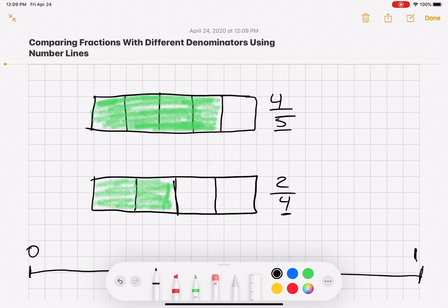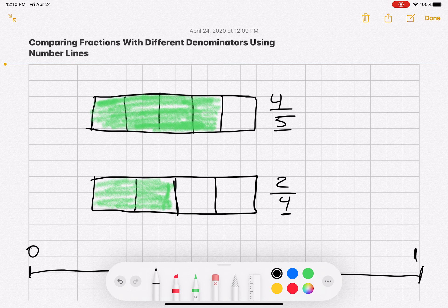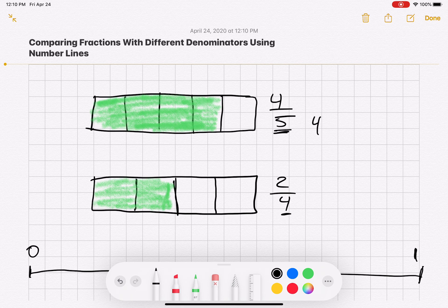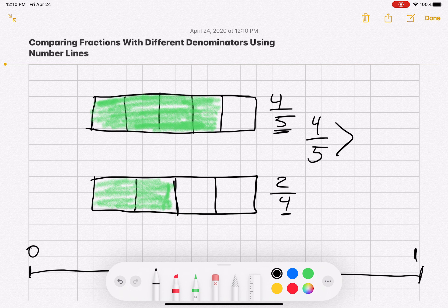So we're comparing fractions with different denominators using number lines. If we look at these two fraction strips, the top one is divided into five and has four sections shaded, and the bottom one has four equal sections with two shaded. If we compare these directly, we can clearly see that four over five is greater than two over four.